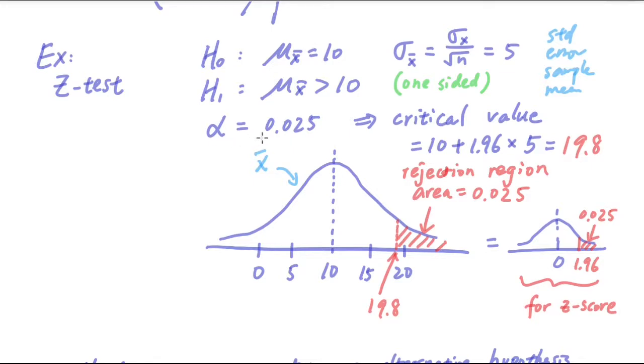Associating with this significance level, we have the critical value of 19.8. So if you look at this chart, on the rejection region on the right side of 19.8, this area has a 0.025 probability.